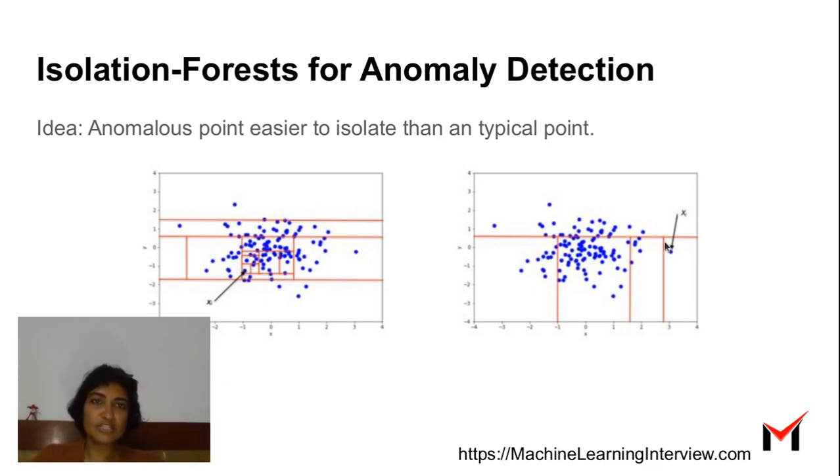An anomalous point is at the fringe of the dataset and can be isolated by just a few subdivisions. Again, we have a video to talk about this in more detail.